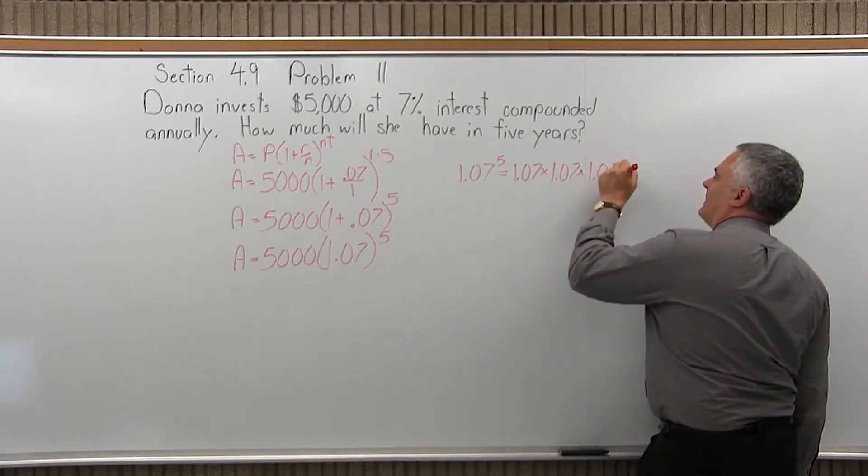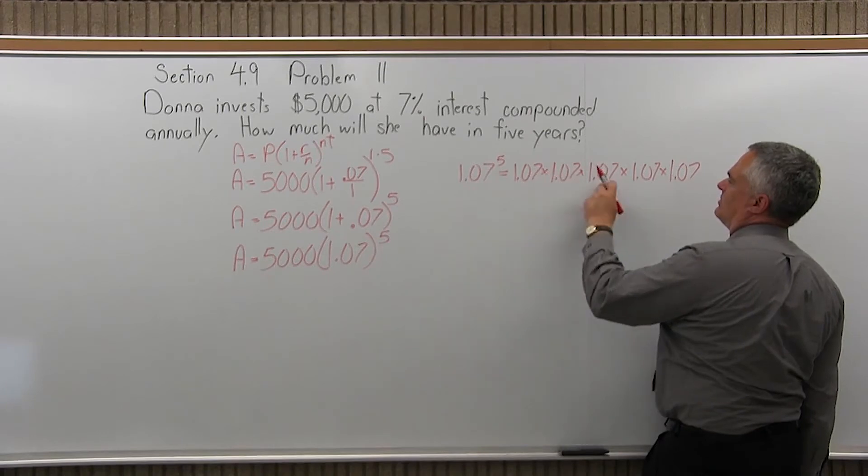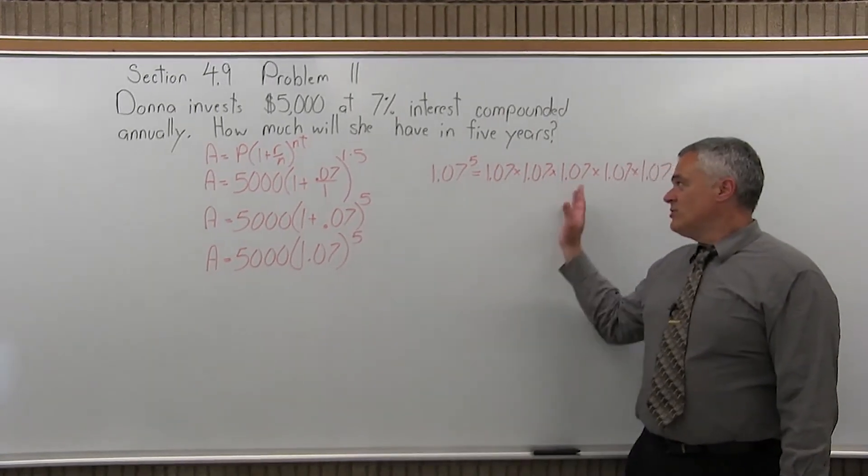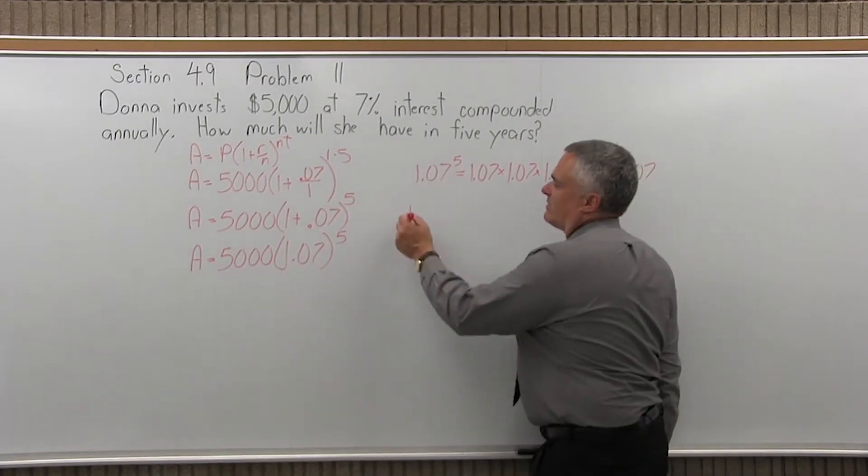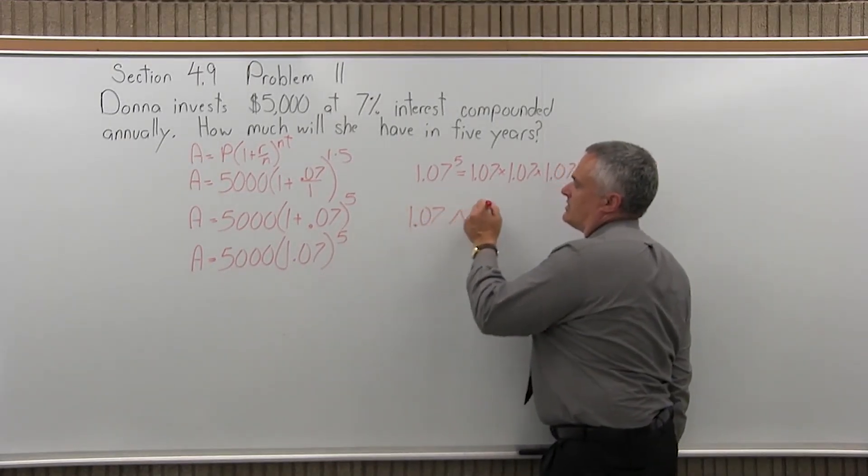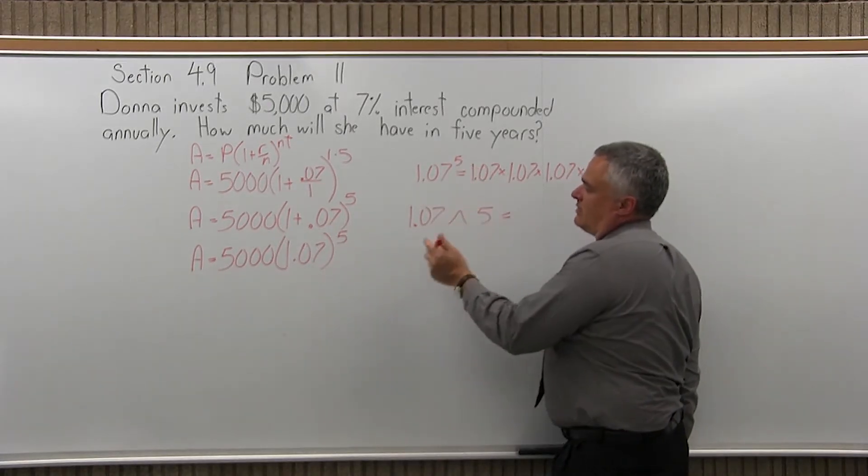Now, all the teachers I know will let you use a calculator to do something like this. If you have a calculator, you can do that. It's easier, though, if you have a calculator with an exponent button. So you'd put in the base, press your exponent button, which may look like this up arrow, put in the exponent, which is 5 for this, and equals.